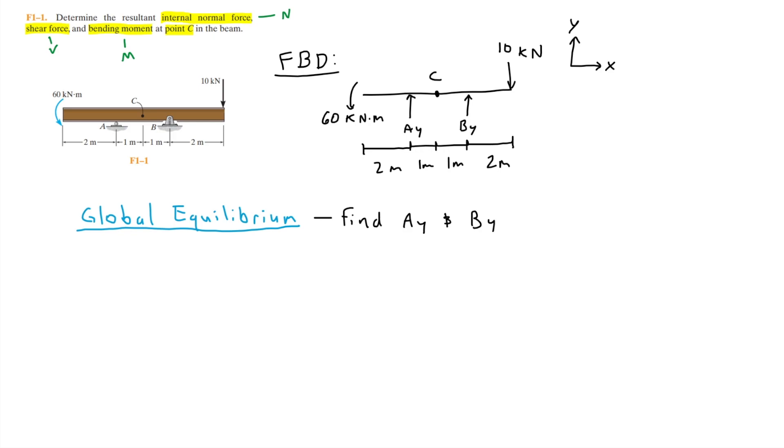Since AY and BY are two unknowns, we can't just go straight into using the sum of forces in the Y direction, since we'll have two unknowns in one equation. So in this case, we can simply use moments. We want to take a moment about a point with an unknown force, so either at point A or B.